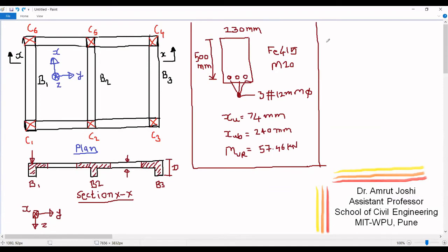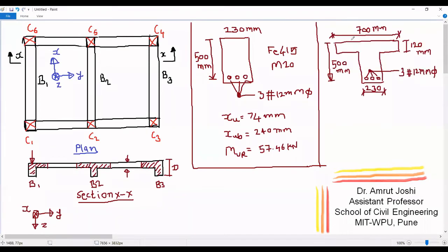Now let us say the same beam has a T cross section. The width of flange is 700 mm, slab thickness is 120 mm, we maintain the same web width of 230 mm, and the same reinforcement of 3 bars of 12 mm diameter with the same grades of steel and concrete. The questions are: where does the neutral axis at failure lie, what is the position of the neutral axis for a balanced section, and what is the moment of resistance of this T section?